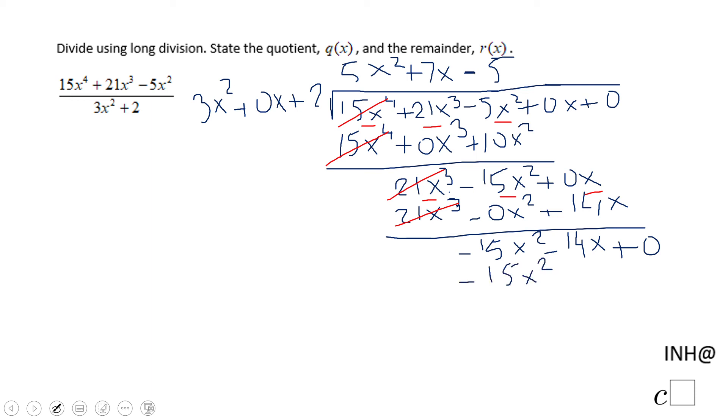So negative 5 times 3x squared is negative 15x squared. Negative 5 times 0x is negative 0x. Negative 5 times 2 is negative 10. And like usual, we're going to subtract. These two guys cancel out.